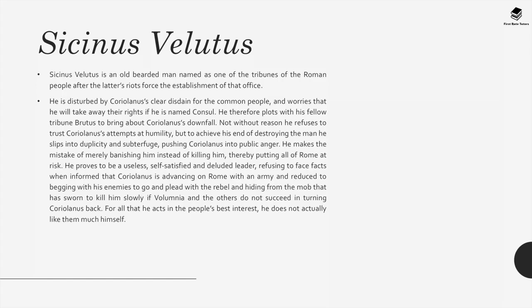Sassinius is an old established man named as one of the tribunes of the Roman people after the latter's riots forced the establishment of that office. He is disturbed by Coriolanus's clear disdain for the common people and worries that Coriolanus will take away their rights if named consul. He therefore plots with his fellow tribune Brutus to bring about Coriolanus's downfall. He pushes Coriolanus into public anger, but makes the mistake of merely banishing him instead of killing him, thereby putting all of Rome at risk. He proves to be a useless, self-satisfying, and deluded leader, refusing to face facts when informed that Coriolanus is advancing on Rome with an army, and reduced to begging his enemies to plead with the rebel.